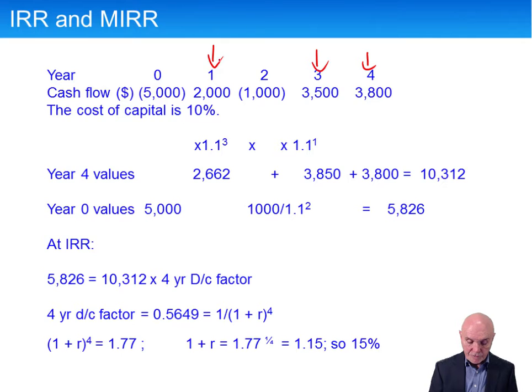So the first thing we do is you go to the positive cash flows. And what you want to do is to say what would they amount to if at time one, for example, I invested that for a number of years and bring it out at time four. So I can invest from one, two, three. I can invest that for three years, put it on deposit for three years and release it at time four.